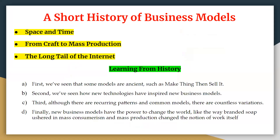Next we have a short history of business models. Whenever we talk about business model history, it refers to that traditional mechanism or traditional systems. Initially when business came into the picture in the olden days, we used to have exchange of goods and services — that was your barter system, where against one good you would get another good or service. The business model still today has the traditional practice of buying, selling, and exchanging goods and services.